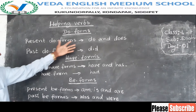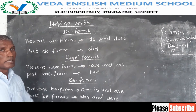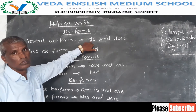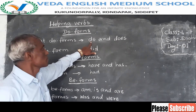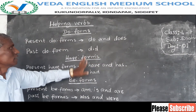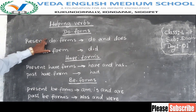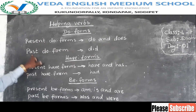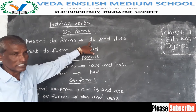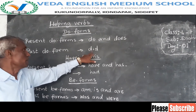Unless you understand the difference between do, does, and did, you can't make a simple present tense or simple past tense. That's why, if you see do or does, it means simple present tense. If you find did, it is always simple past tense. So present do forms are for simple present tense, and past do form is for simple past tense.